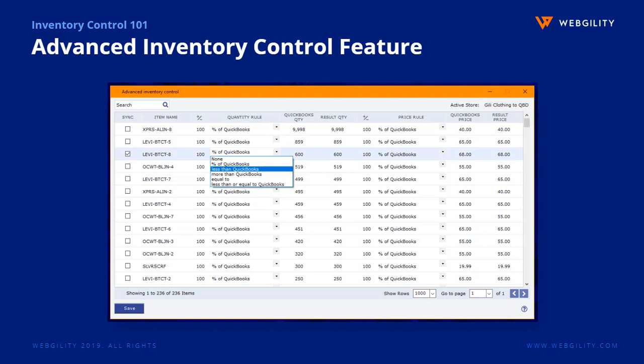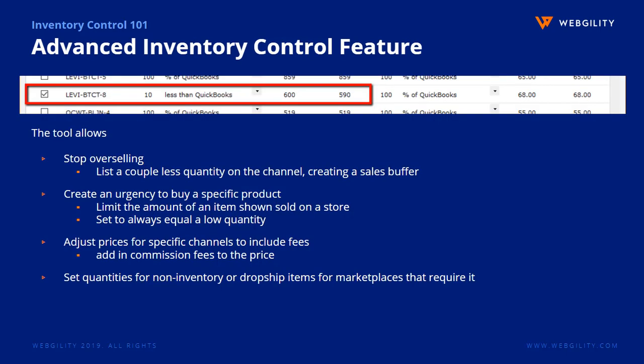This precise control over quantity and price on an item-by-item basis allows you to set an amount less than QuickBooks, more than QuickBooks, always equal to specific amounts, or count down with an upper limiting threshold. The power of Webgility Desktop's Advanced Inventory Control Tool allows you to stop overselling by setting a small selling buffer for quantities on fast-moving products, create an urgency to buy by limiting the number shown available, include back-end marketplace fees within your prices, as well as set quantities for non-inventory and dropship products when a marketplace requires them.